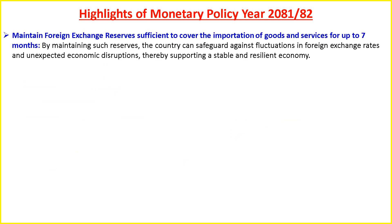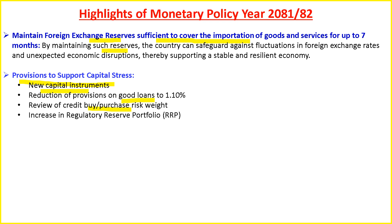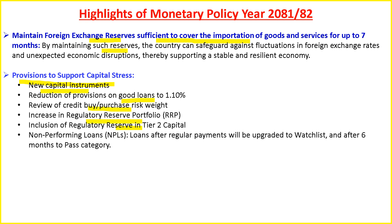The policy aims at maintaining foreign exchange reserves sufficient to cover the importation of goods and services for up to seven months, safeguarding against fluctuations in foreign exchange rates and unexpected economic disruptions. Additional provisions include support for new capital instruments, reduction of provisioning on good loans to 1.10 percent from 1.20 percent, review of credit buy or purchase risk weight, increase in regulatory reserve portfolio, and inclusion of regulatory reserve in tier-2 capital. Non-performing loans after regular repayments will be upgraded to watch list and after six months to the pass category.